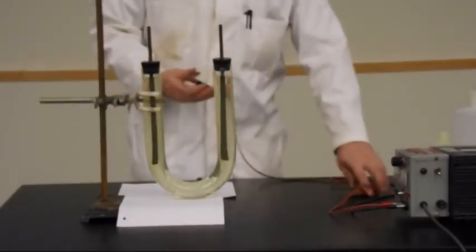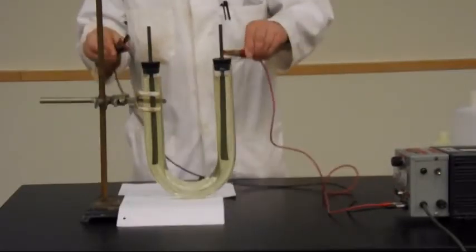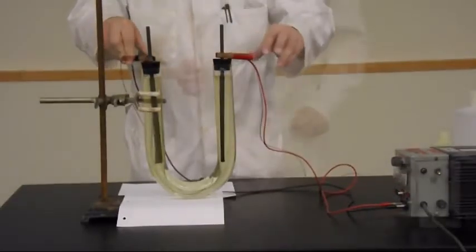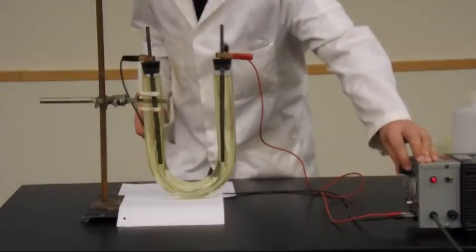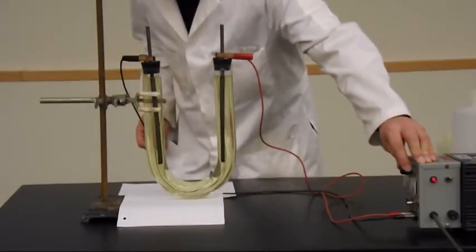These are two graphite rods that I'm using as electrodes. They are both inert electrodes. They don't take part in the chemistry. They're just there to pass current. So all we're going to do now is just turn it on and apply an electrical potential.